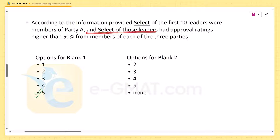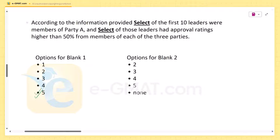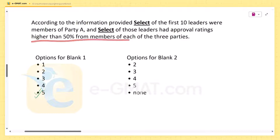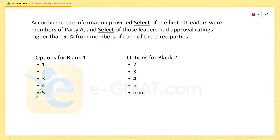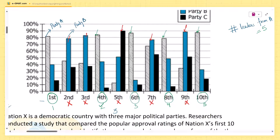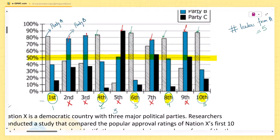The next part asks: of those five leaders, how many had approval ratings higher than 50% from members of each of the three parties? So we need to find how many of these five leaders had approval ratings greater than 50% from all three parties. Let's draw a line at 50% on the graph and check which of the five leaders have all three bars going beyond 50%.